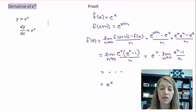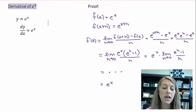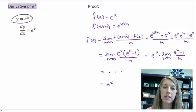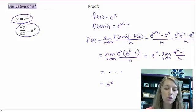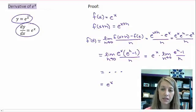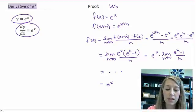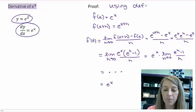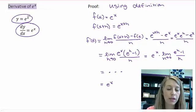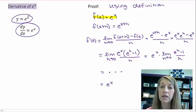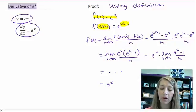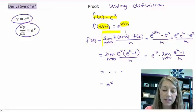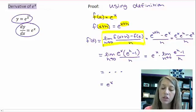Let's look specifically at the exponential rules. If we have y equals e to the x, then the derivative of that is uniquely enough itself — the derivative is e to the x. We prove this by using the definition of the derivative. We let our function be e to the x, then plug in x plus h as the first step of the definition.